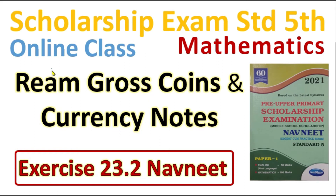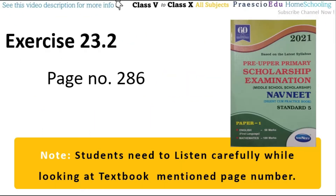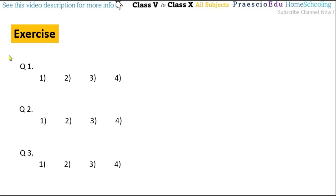Hello students, welcome to Price USU YouTube channel. This is scholarship exam standard fifth online class, subject mathematics. The topic is ream gross, or we can say paper measurements, and with this, coins and currency notes. This is exercise 23.2, available in our non-eat digest on page number 287. Question number one: Swara purchased a fridge for rupees 15,980 and a TV set for rupees 20,740.